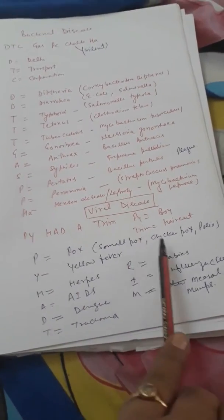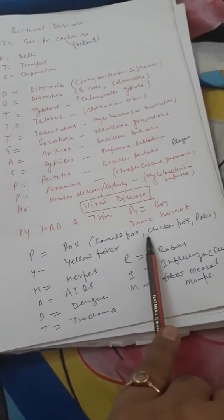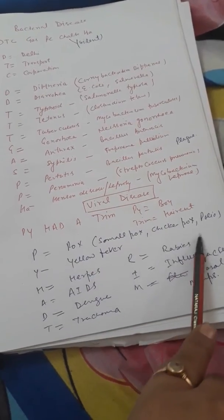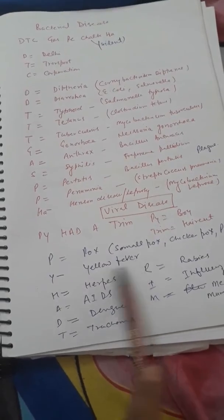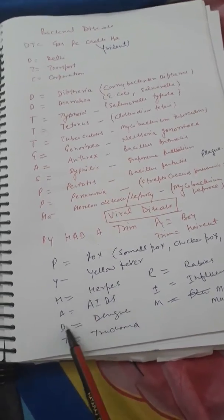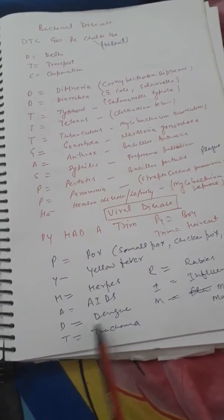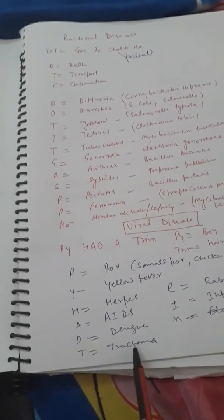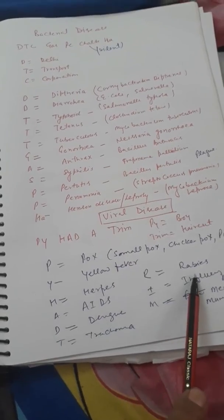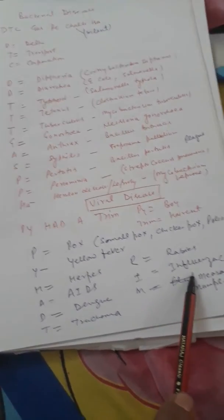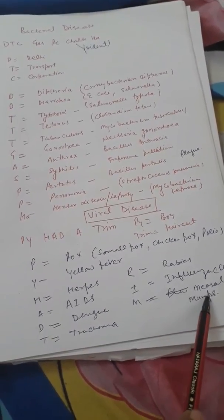Yeh chiz hai. P represent karta hai Polio ko bhi. Toh yeh yahan se aa jayega. Yellow fever Y se aa jayega. H se aa jayega Herpes. A se aa jayega AIDS. D se aa jayega Dengue. T se aa jayega Trachoma. T for Trachoma.